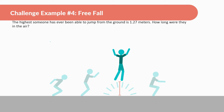Let's look at this last example problem. The highest height someone has ever been able to jump from the ground is 1.27 meters. How long were they in the air? So let's draw this out — we have this person at the highest jump ever, and the only real information we know is that this person jumped 1.27 meters off the ground, and we want to figure out how long this took.